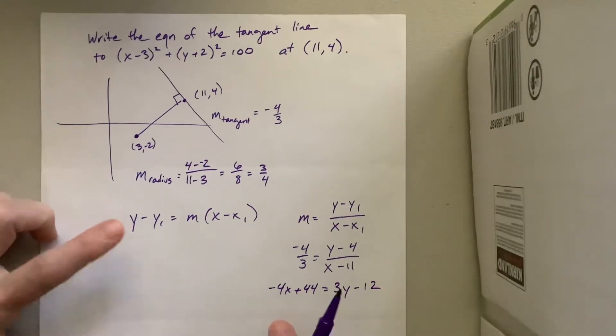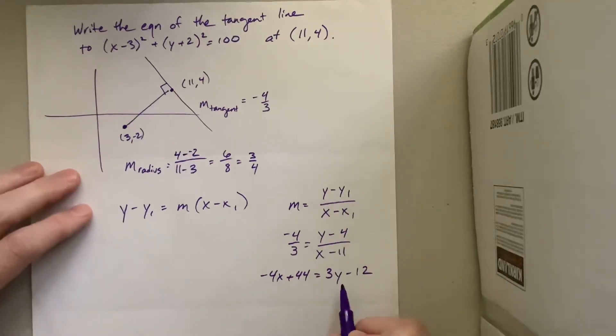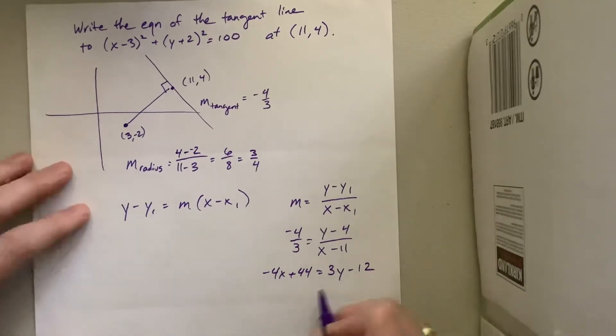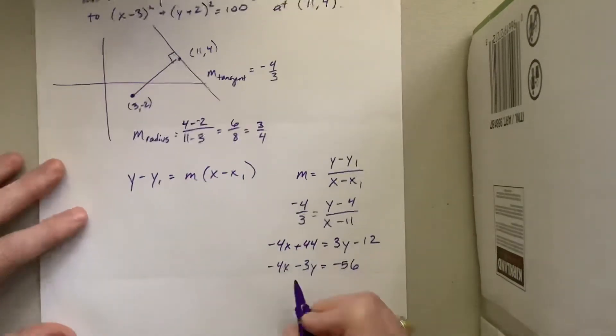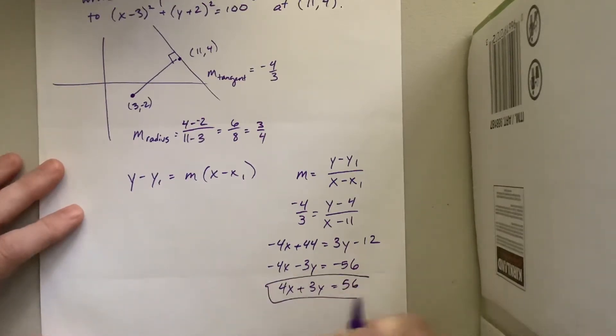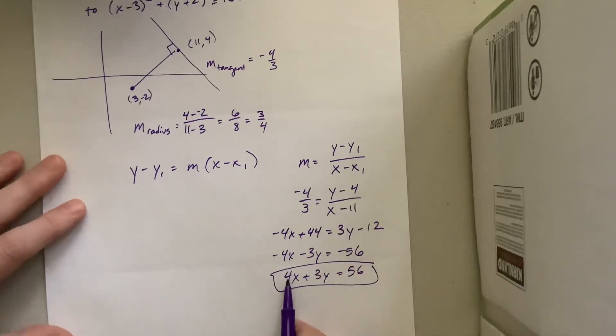I'm going to get to the same spot if I had done it over here. I can subtract this as -4x - 3y = -56. So this is almost standard form. Standard form is when this guy, well hang on, this is standard form. Standard form is when the first term is positive and everybody is an integer. And it's ax + by = c.